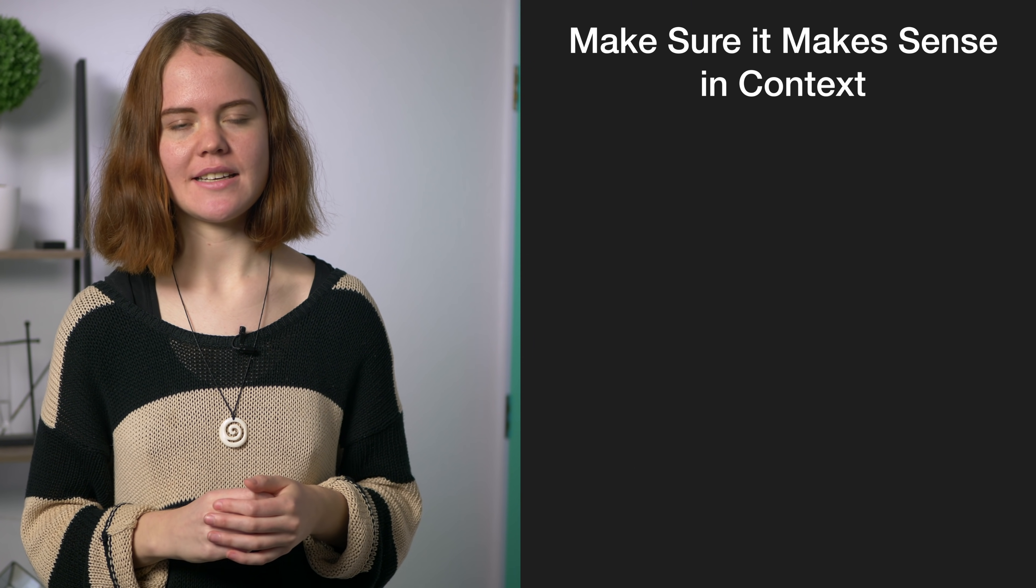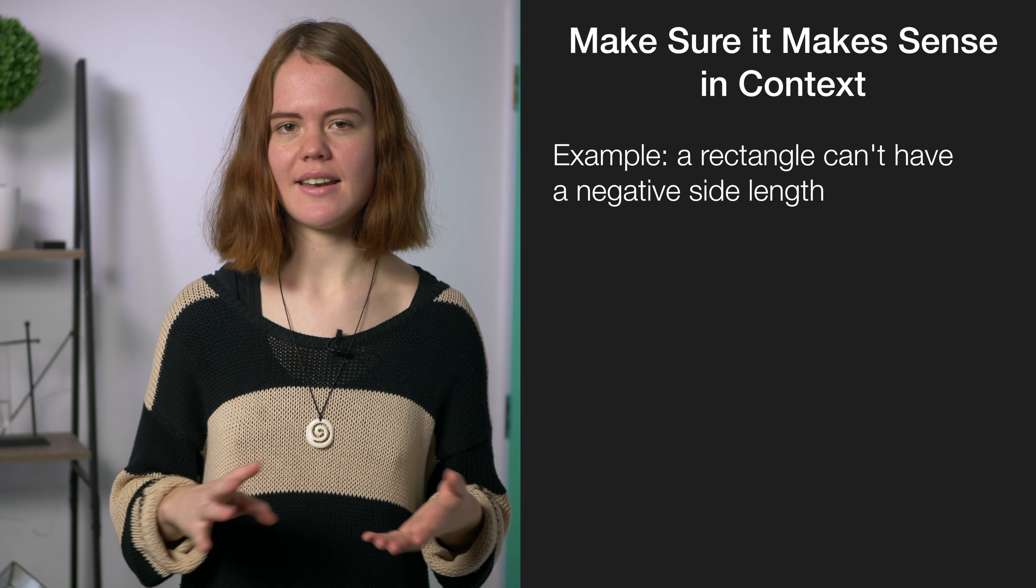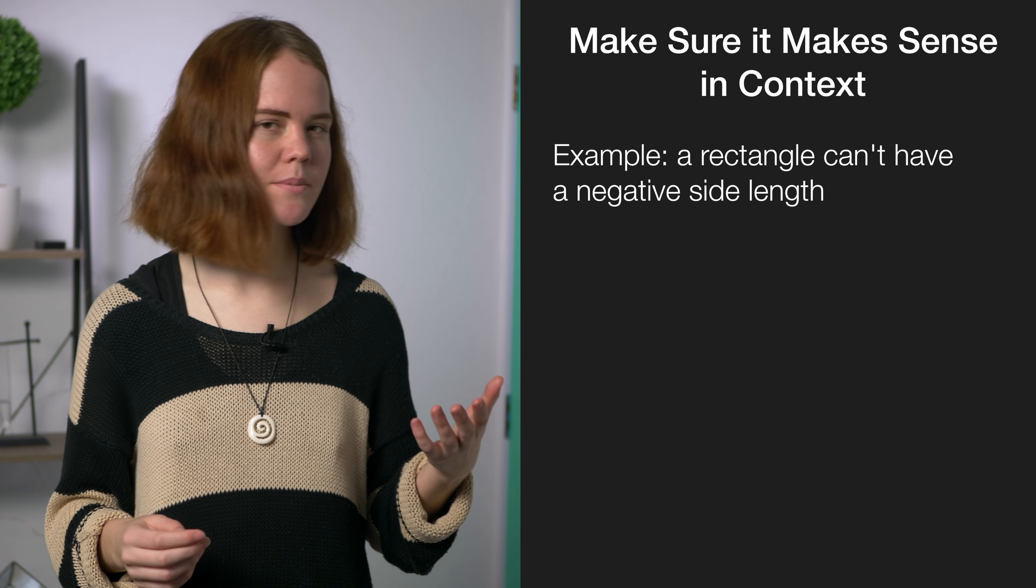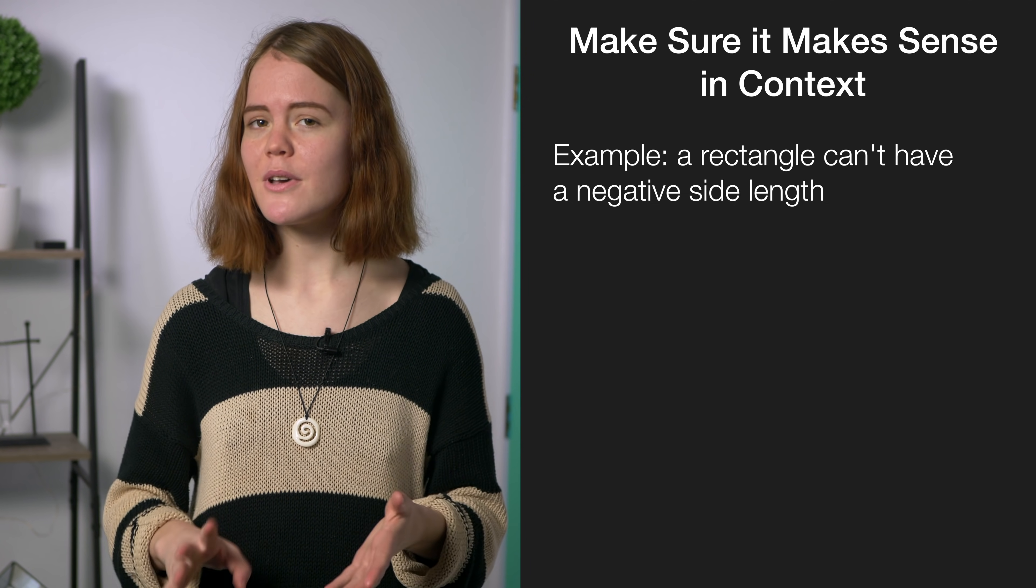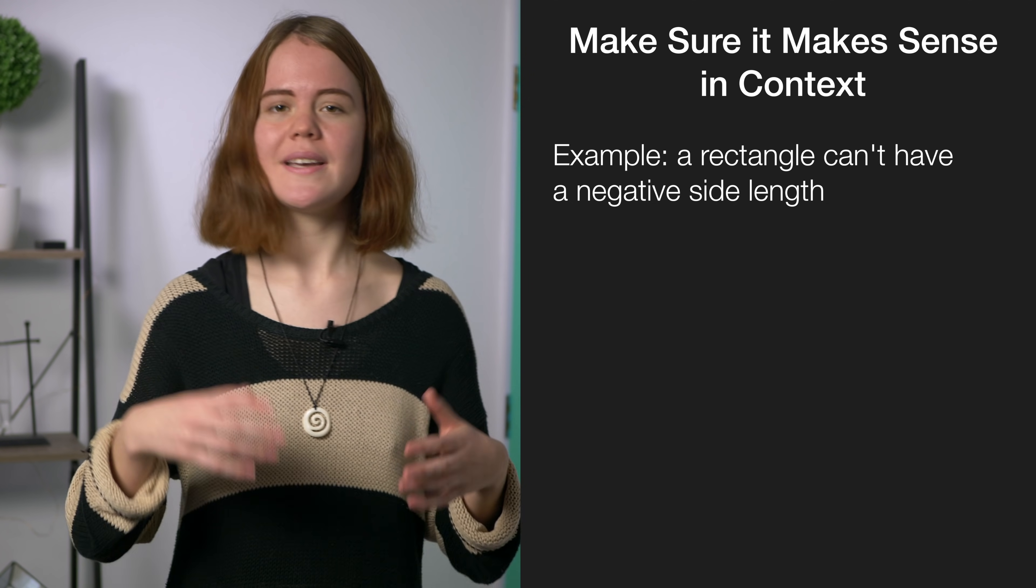Finally once you have your answer go back and make sure it makes sense in context. For example you know that a rectangle can't have a negative side length so if you got two possible answers for the rectangle side length but one of them was negative still write both of them down but then you'll just say we can't have a negative number and you'd give the positive one as your final answer.